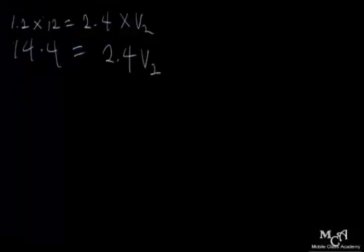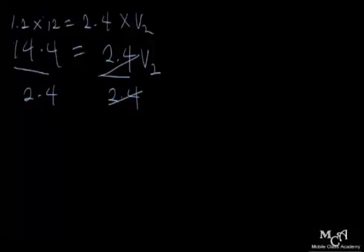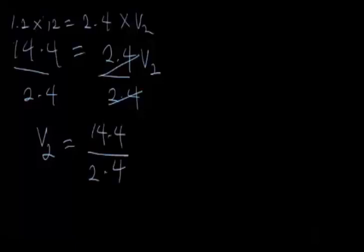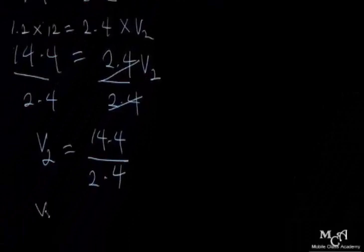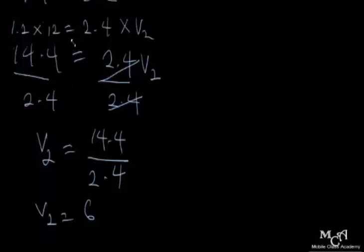To find V2, divide both sides by 2.4. The 2.4 cancels on the right, leaving V2 = 14.4 ÷ 2.4. Using a calculator, 14.4 divided by 2.4 gives us 6. So the final volume V2 is 6 — and the unit of volume is very important — so V2 = 6 liters.